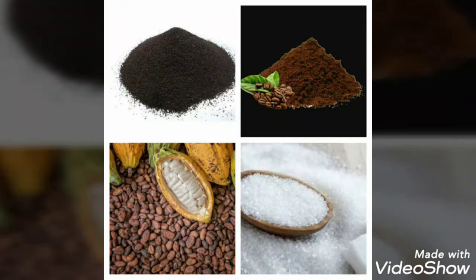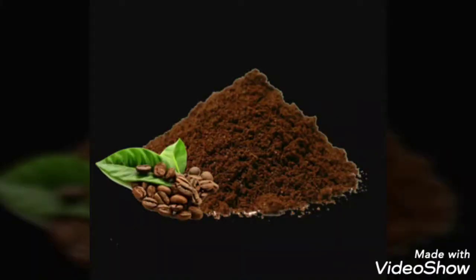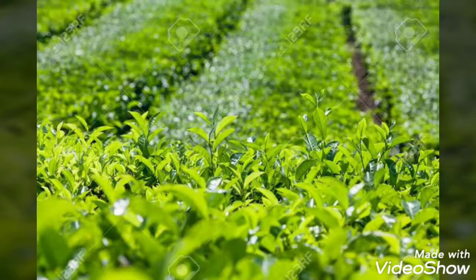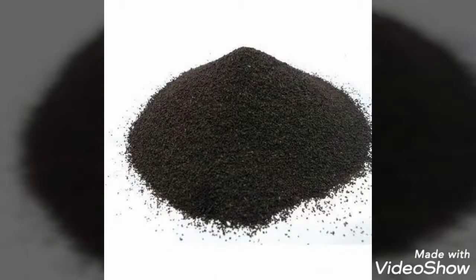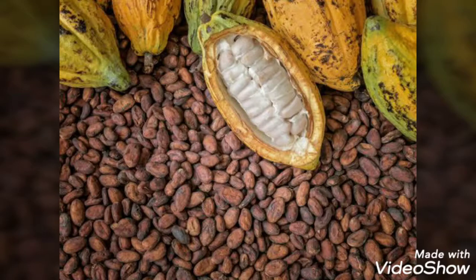Plants give us tea, coffee, cocoa, and sugar. Coffee beans give us coffee. Tea leaves give us tea. Seeds of the cocoa tree give us cocoa. Chocolate is made from cocoa.